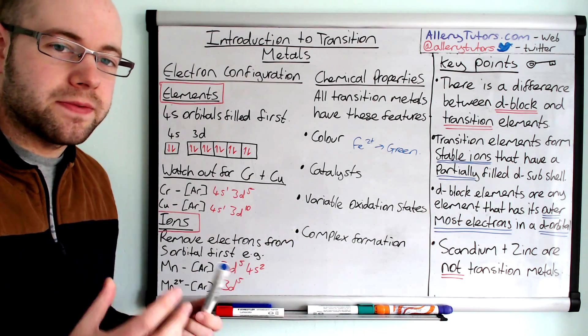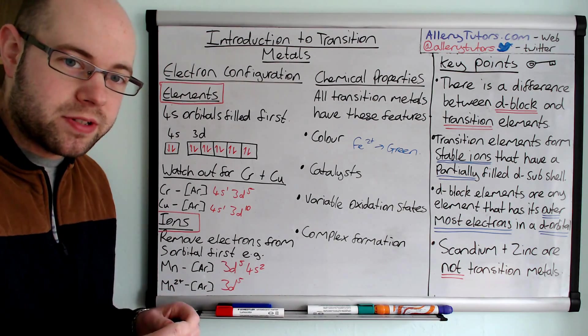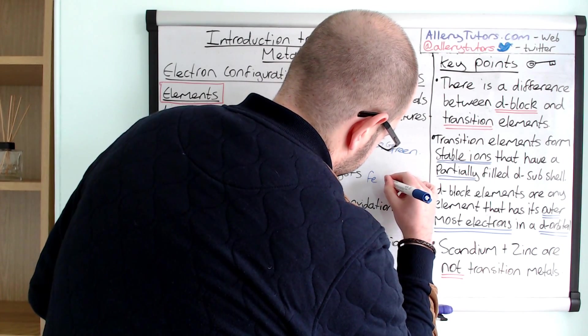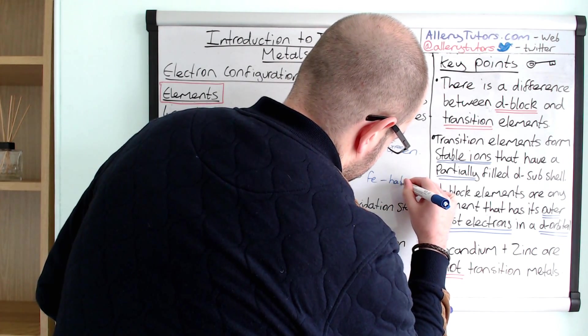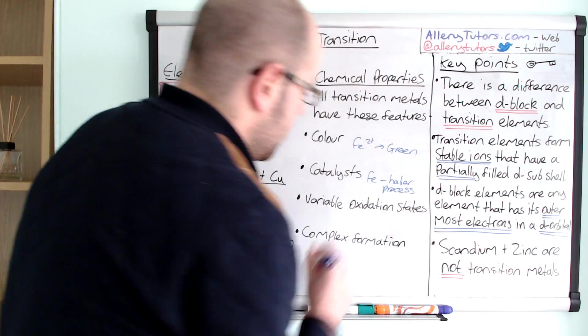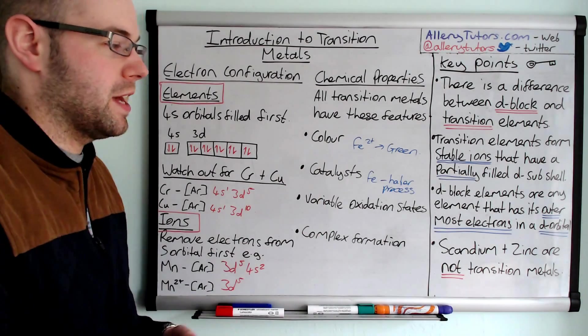Catalysts. They're really good catalysts. For example, we can use iron as a catalyst in the Haber process, in the manufacture of ammonia. And there are loads of other catalysts as well, but that's just one example.